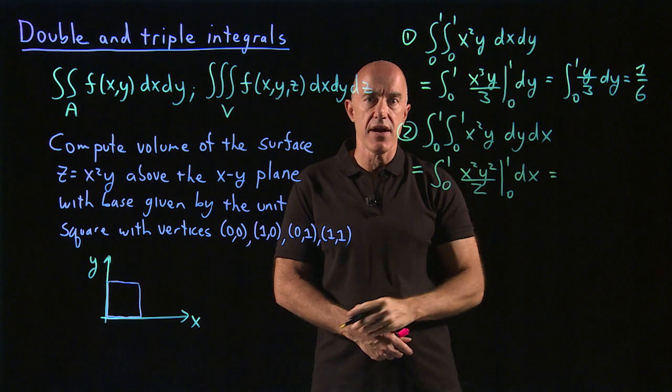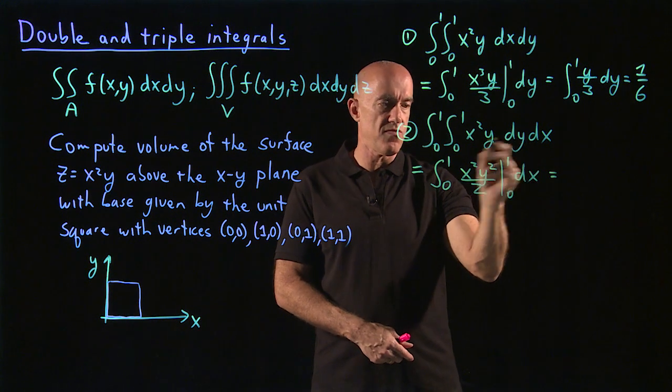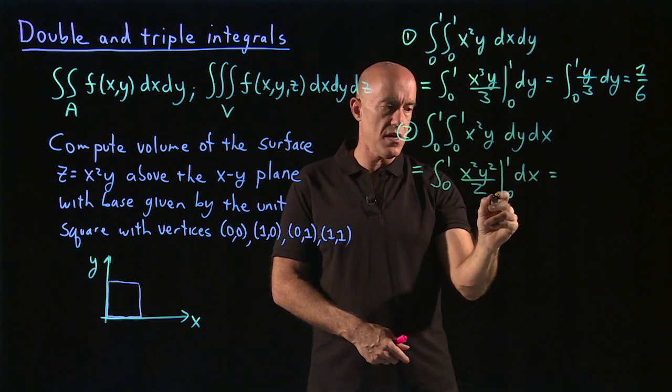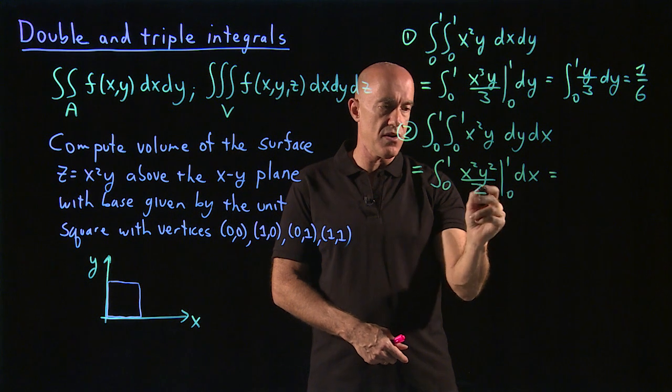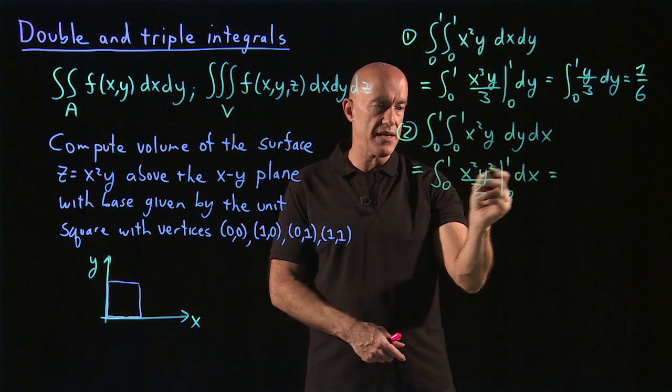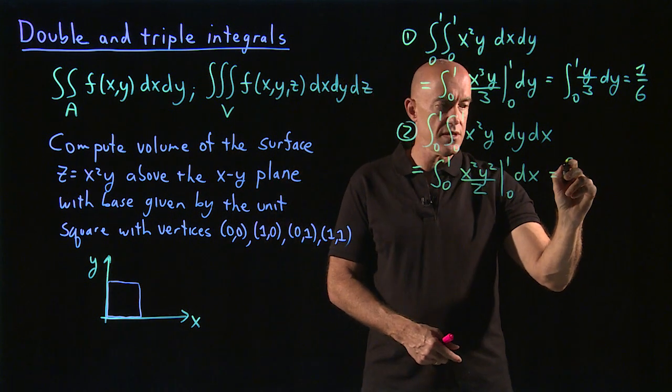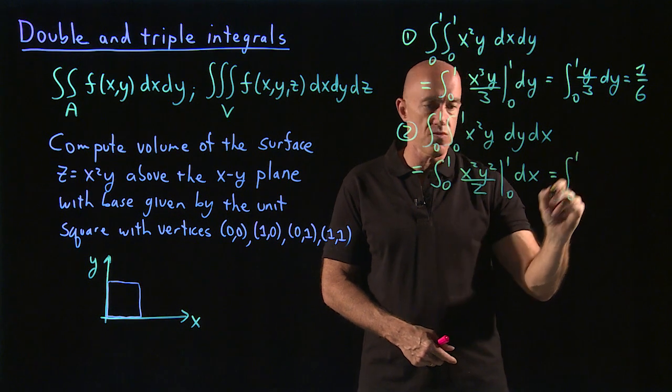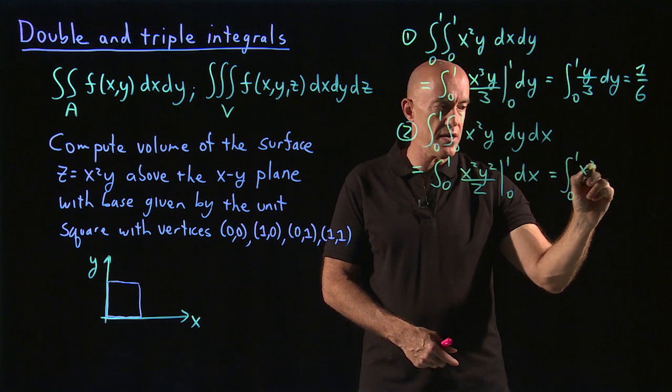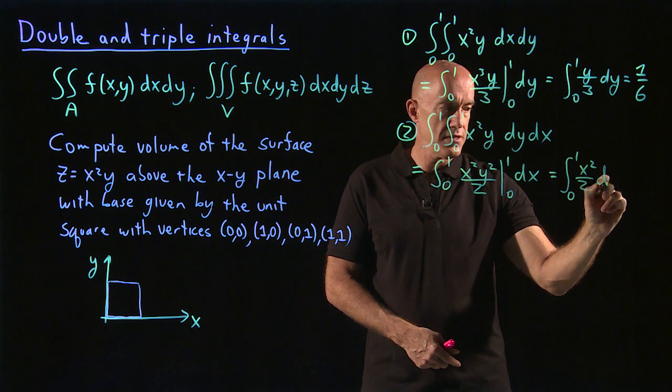So now this limit here corresponds to the limit of y. The lower limit will be 0, so the upper limit will be x squared over 2. So this is the integral from 0 to 1 of x squared over 2 dx.